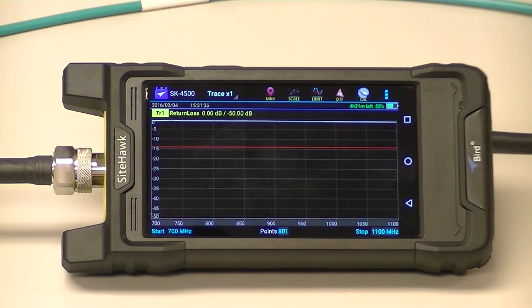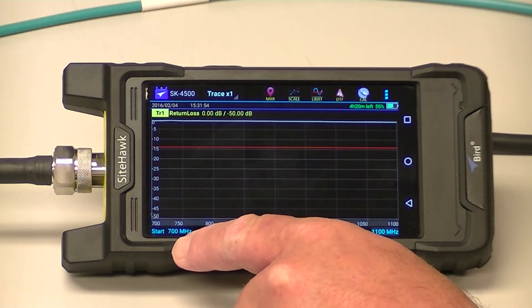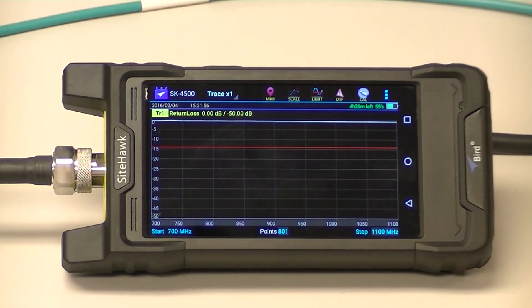I'm going to go through the procedure on calibrating the SightHawk before you perform a measurement. Anytime you do a distance to fault, a return loss sweep, or measure and match mode, you want to set up all your parameters of the SightHawk, such as your frequency. In this case, I'm set from 700 megahertz to 1100 megahertz.